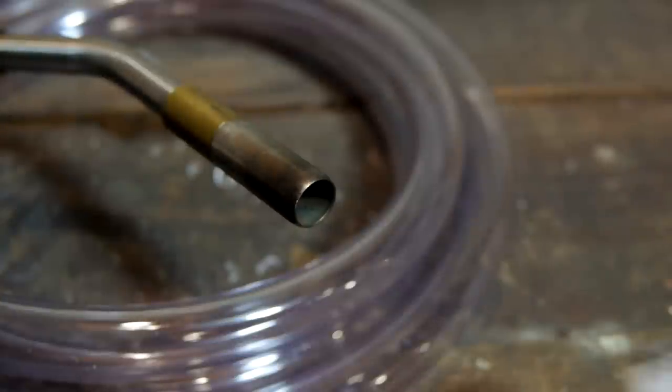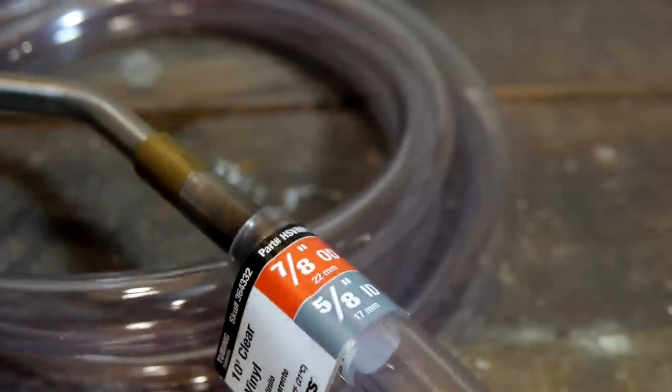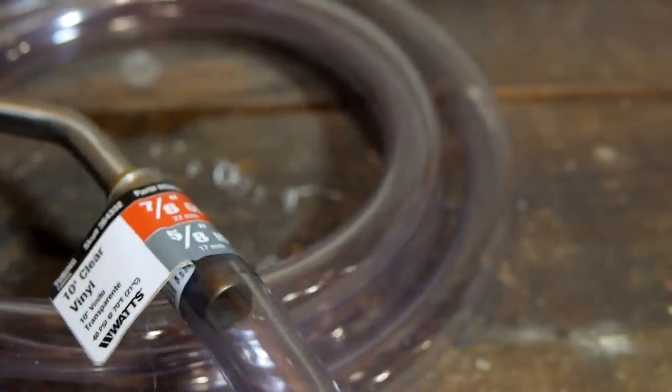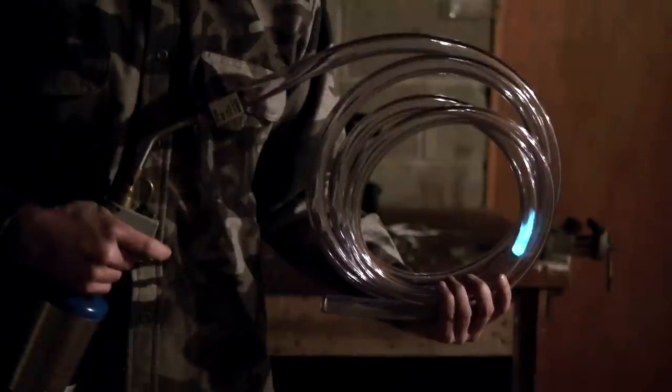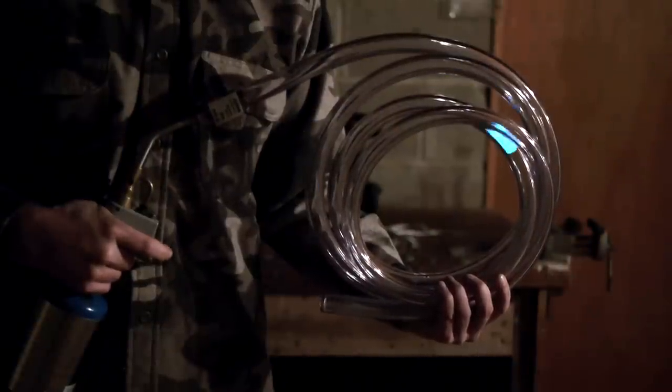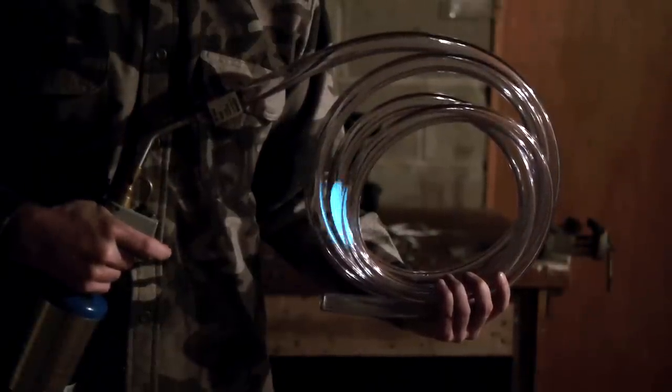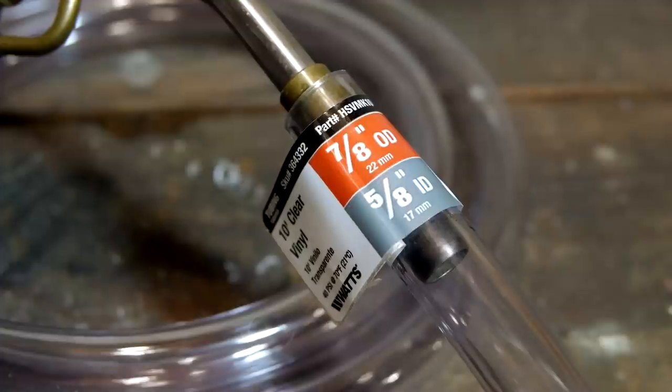Conveniently, this vinyl tubing fits snugly over the end of my torch. A hose clamp could be used to keep it in place if it weren't already such a nice fit. The torch mixes just the right amount of fuel and air into the tube with the button partially depressed, and a click of the igniter sparks a flame.